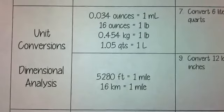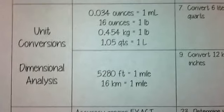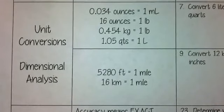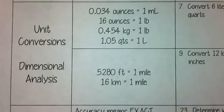Now we're going to look at unit conversions and dimensional analysis. All we're really doing is converting from one unit to the next. Dimensional analysis is the technique where we multiply by a fraction that's equivalent to 1 — we can multiply by 1 as many times as we want — and it's going to end up changing our units for us. Some conversions are given to you; some you should just know.